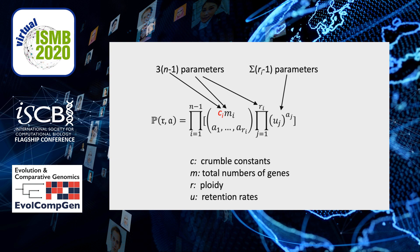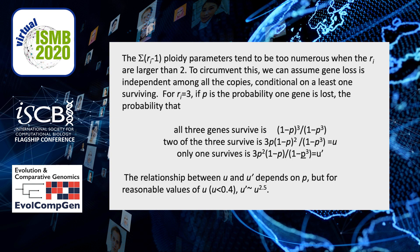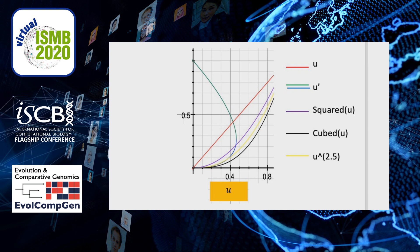This crumbling constant C is added into the equation, and this applies in general whenever we have more retention rates than two — when RI is bigger than two, we have extra parameters. However, we can address this by assuming that the number of genes lost follows a binomial distribution based on a loss probability P. With that, we find that U prime, the probability of retaining three genes, is somewhere between U squared and U cubed, as long as U is not too large — between 0 and 0.4.